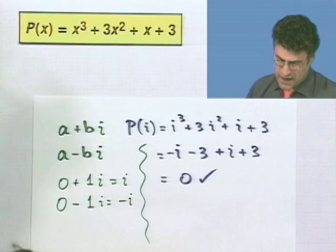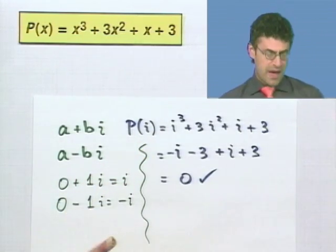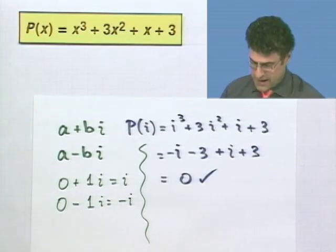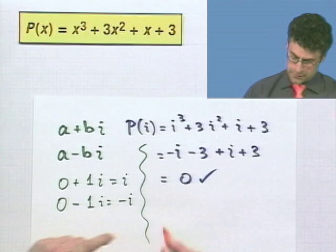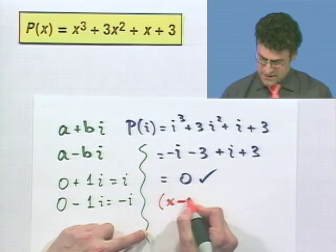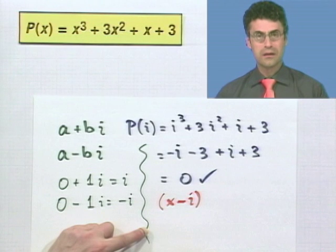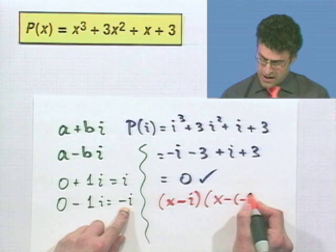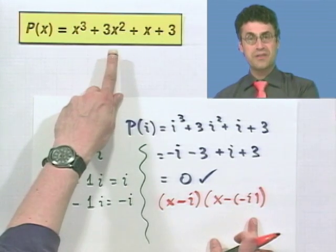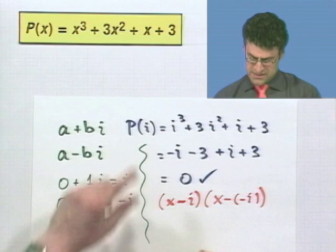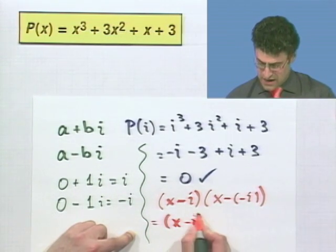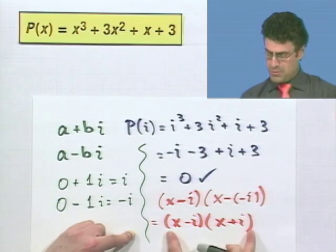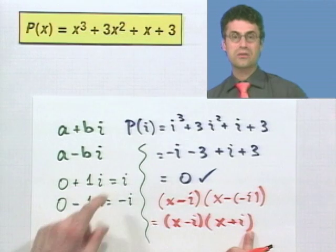Well, check this out. If I know that i is a zero, that means that of this polynomial, I know a factor. A factor must, in fact, be x minus i. And then I have another factor known because I must have x minus negative i. So both of these must be factors of this. And what does this equal? Well, this just equals x minus i, and then a negative, a negative is a positive, so it's x plus i. And so that must evenly divide into this polynomial.